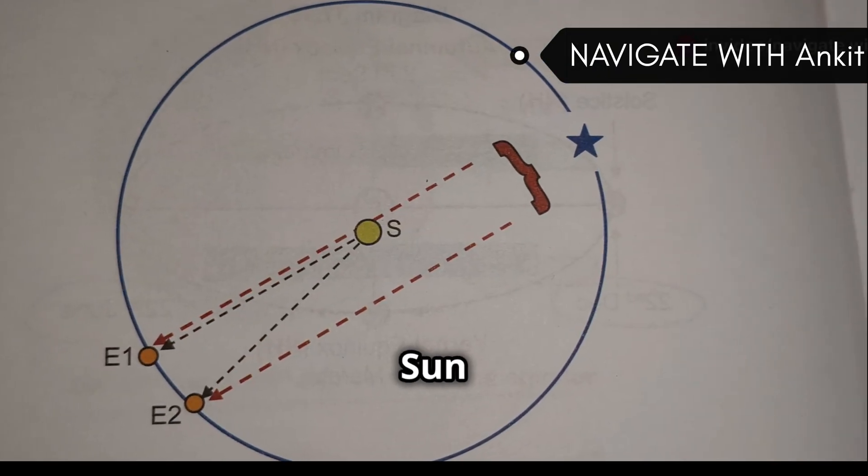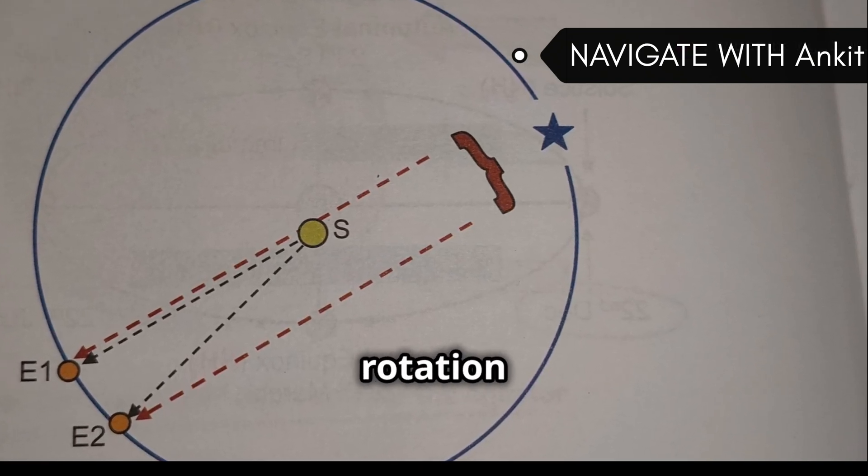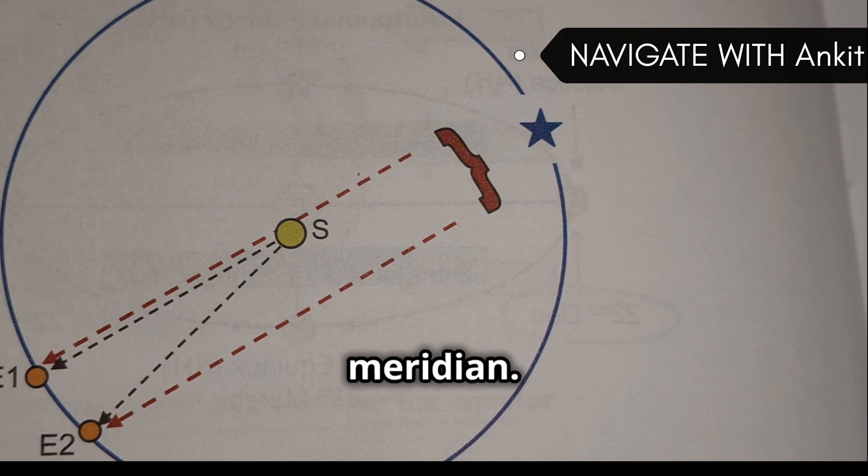So, when the Sun is on your meridian at E2, it appears that the Sun needs about one more degree of rotation by the Earth to come back to your meridian.